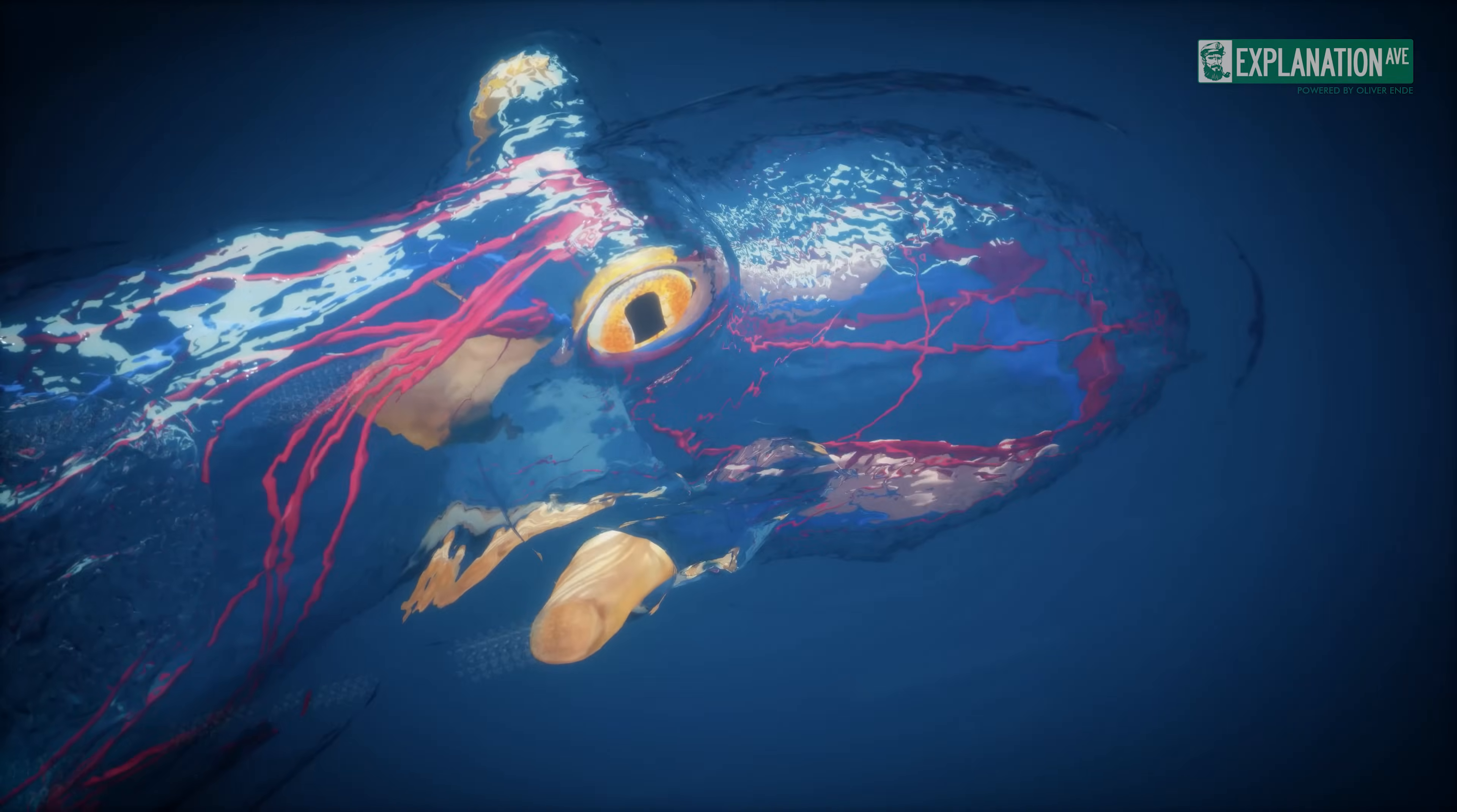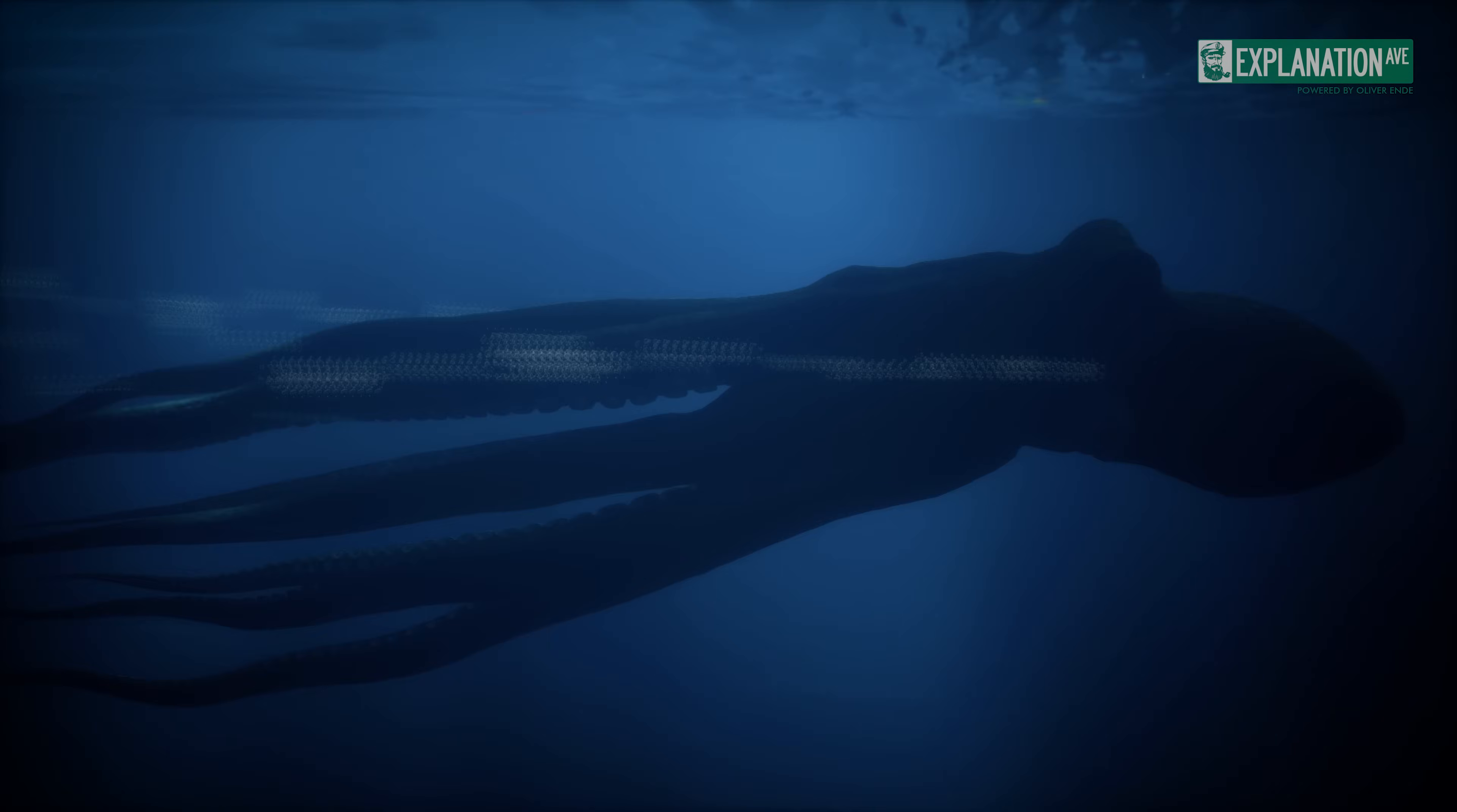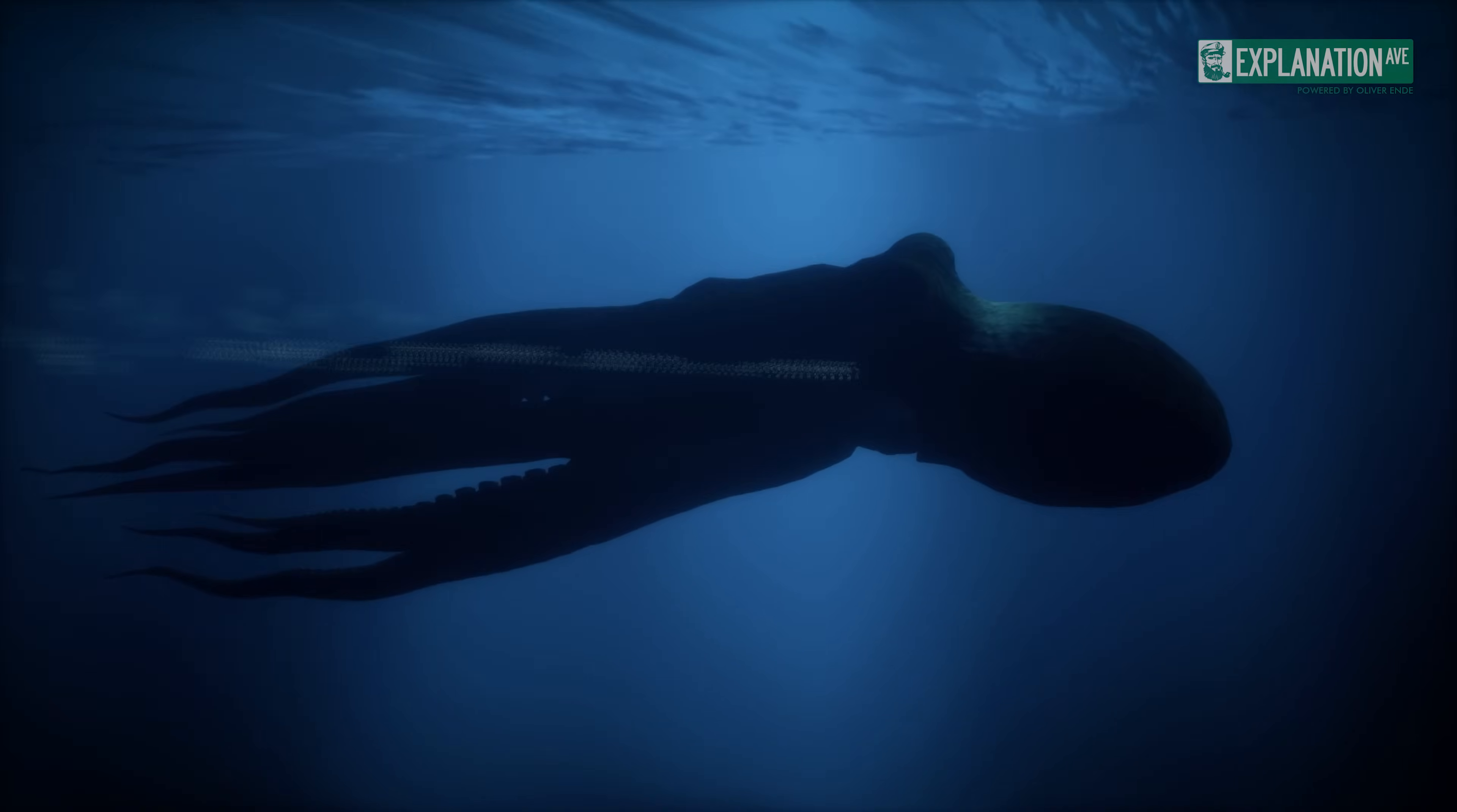In addition, the siphon serves as a propulsion system. In the so-called jet propulsion, water is forced through the siphon. The tentacles of the octopus become rigid and the octopus forms a torpedo-like shape to shoot through the water at great speed.